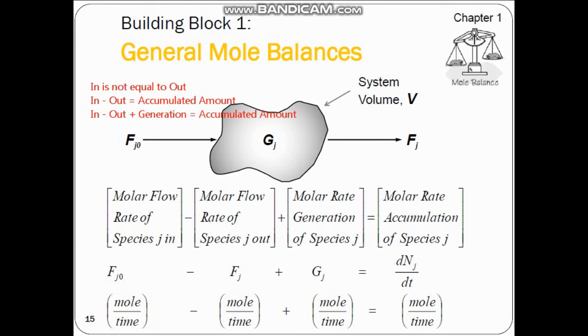And then we will obviously have the accumulation, the amount of species j which is accumulated inside the system. This amount, the molar rate accumulation of species j, would be the amount...